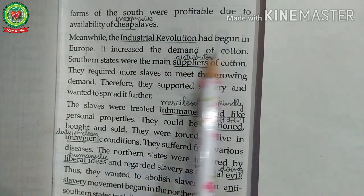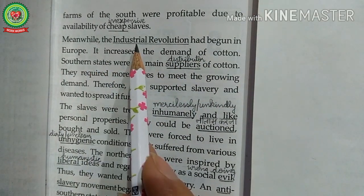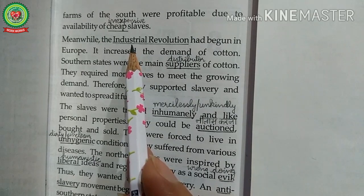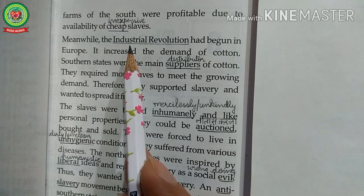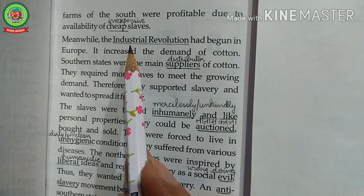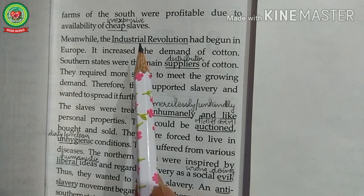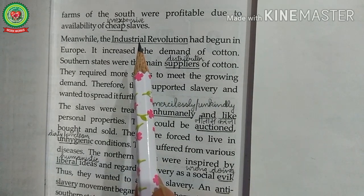Meanwhile, the Industrial Revolution had begun in Europe. The Industrial Revolution was the transition to new manufacturing processes in Europe and the United States in the period from about 1760 to sometime between 1820 and 1840. This transition included going from hand production methods to machines, new chemical manufacturing and iron production processes. The textiles were the dominant industry of the Industrial Revolution in terms of employment, value of output, and capital invested. The textile industry was also the first to use modern production methods.